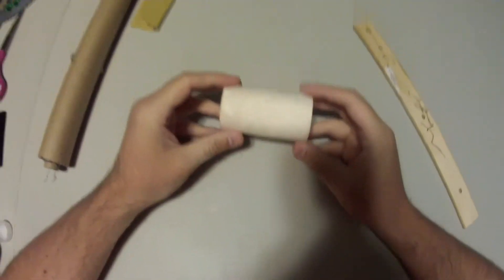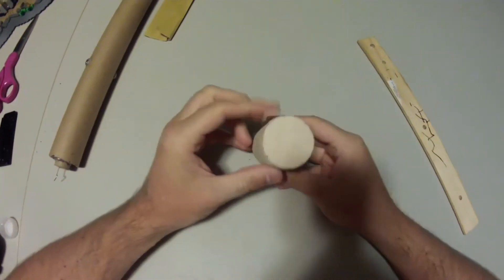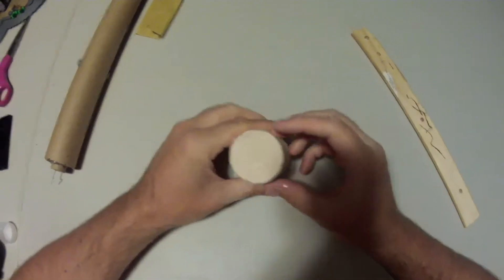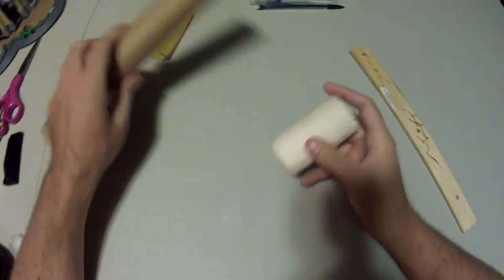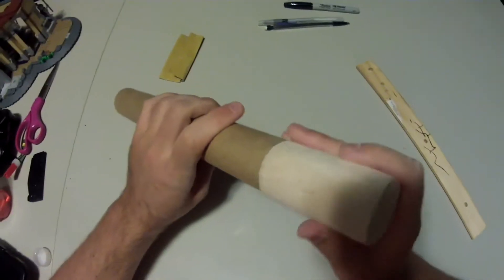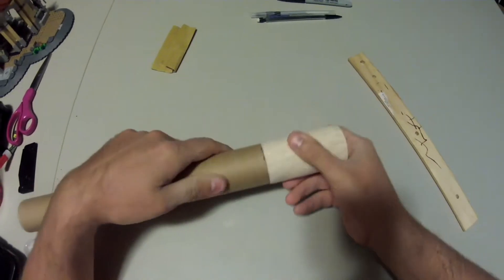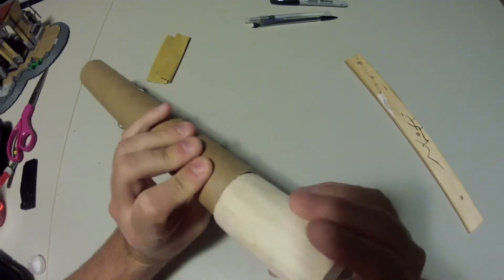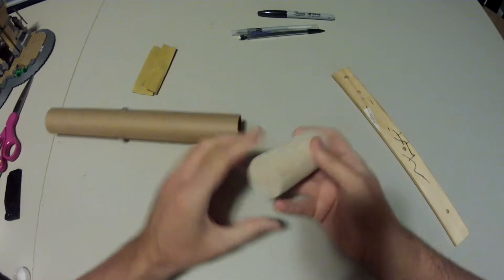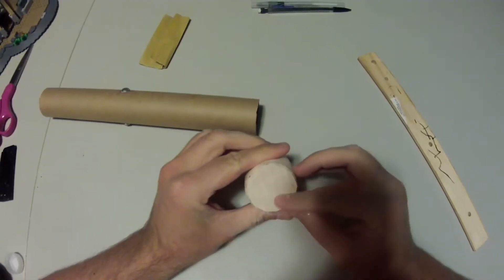This is what your balsa wood should look like. It should be a wood cylinder. It should roll pretty decently but it should not fit within your rocket tube. If it fits in your rocket tube, then you did something wrong. It should be basically an extension of your rocket tube. It shouldn't fit into it.